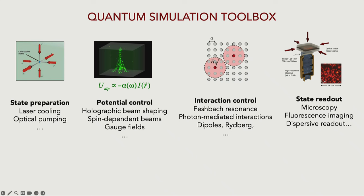The key to having a good quantum simulator is that you start with an excellent initial state preparation, that you have control over how you want to evolve the state — which means control over as many possible Hamiltonians as possible — and then finally that you can read it out with high fidelity.